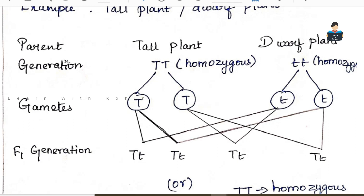You can check the link in the description for important terms. A character is controlled by two forms of genes — that is, two contrasting alleles. If one plant is tall or short, these two contrasting forms of genes are important.